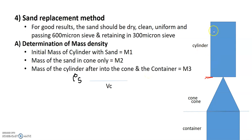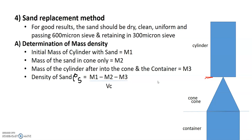We weigh the cylinder using a balance. The initial mass of the cylinder with sand is M1. This is the calibration step where we record the mass values needed for calculation.